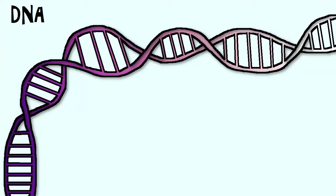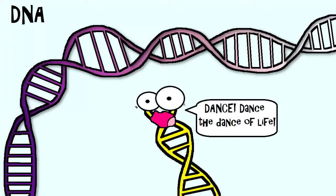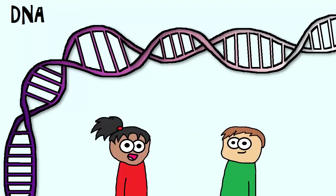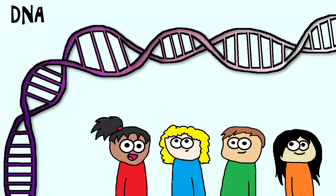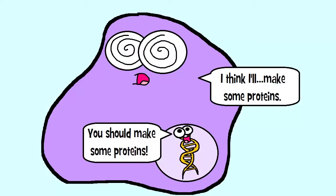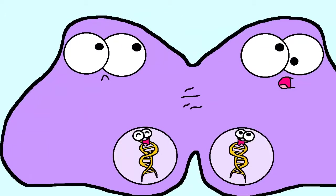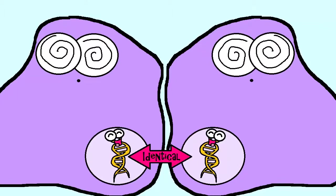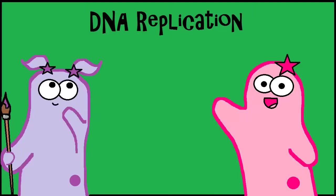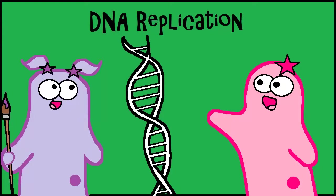DNA. We talk about it so much — it is the ultimate director for cells and it codes for your traits. It's a major component of what makes you, you. When you have a really important molecule like DNA that is ultimately responsible for controlling the cell, it would make sense that when you make another cell, like in mitosis, you would also have to get more DNA into that cell. And that introduces our topic of DNA replication, which means making more DNA.